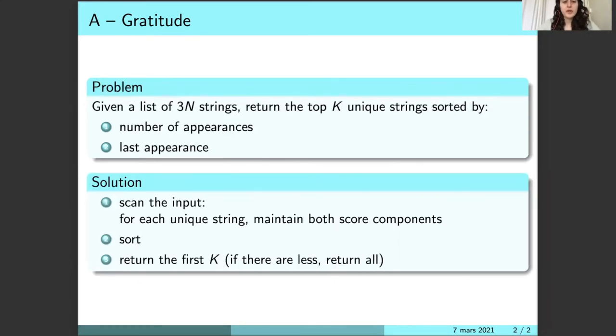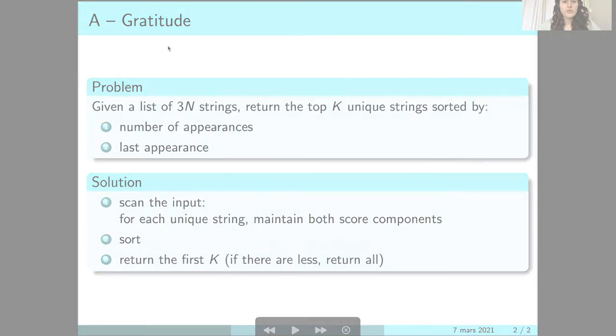The solution is to scan the input and for each unique string maintain the number of appearances and the last appearance, then sort all of the unique strings and return the first K. If there are less than K unique strings, we need to return all of them.